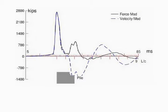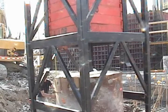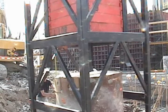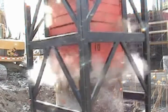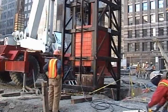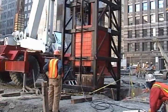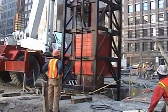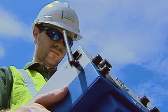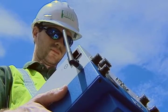The energy of the impact must be sufficient to activate the capacity of the shaft, which means that the shaft should move a small distance under the ram impact. This distance cannot be easily seen, but it can be measured and observed on the screen of the instrument.